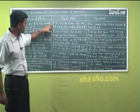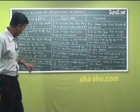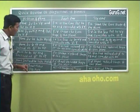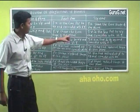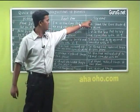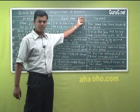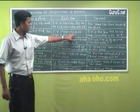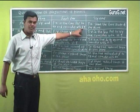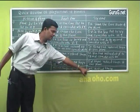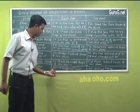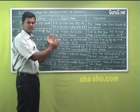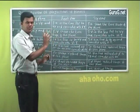FV is front view, TV is top view — I am writing in short form. VT means vertical trace, and HT means horizontal trace — whatever you have learnt, I am just writing it in short form.